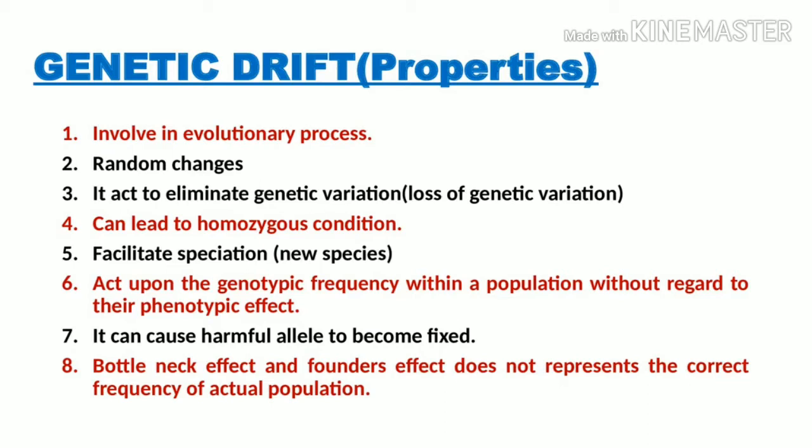The second property is that genetic drift involves random changes. We have seen this through different examples and diagrams — it is a random process. The third property is that it acts to eliminate genetic variation, meaning it leads to a loss of genetic variation.